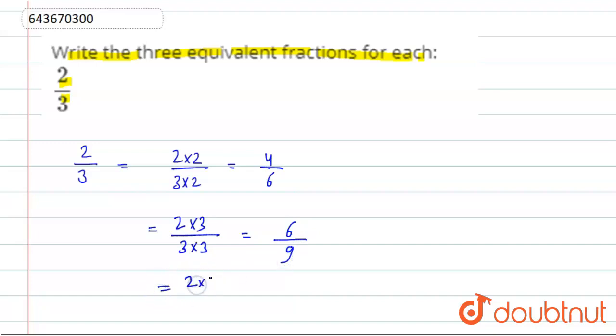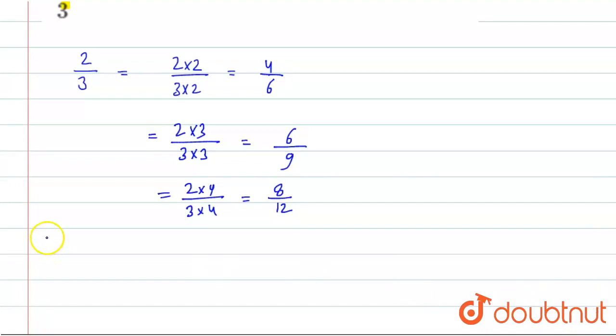Now again we multiply 4 in numerator and denominator, so this will be equal to 8 by 12. So equivalent fractions of 2 by 3 are 4 by 6, 6 by 9, 8 by 12.